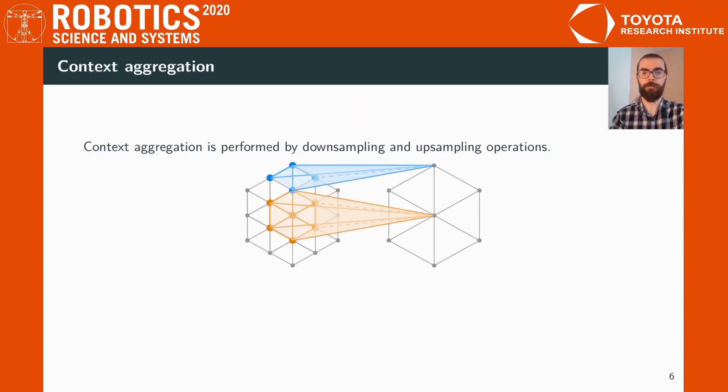Context aggregation is performed by upsampling and downsampling operations. And the advantage is that these operations perform only on the lattice and therefore independent of the size of the input point cloud, gaining therefore memory efficiency and speed.